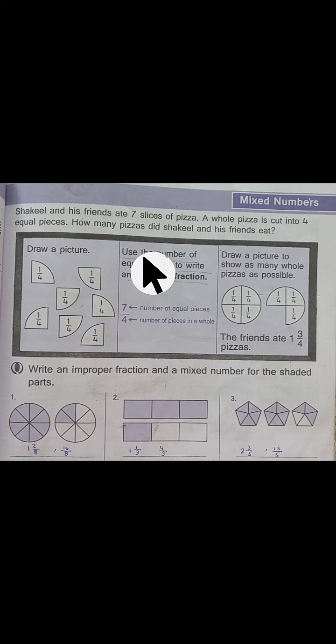Look at the pictures. A pizza consists of 4 parts. Here are 7 parts. This means a whole pizza plus 3 parts.